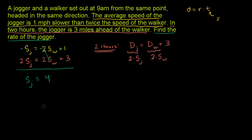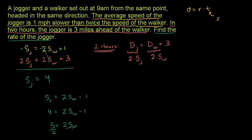If we also wanted to figure out the rate of the walker, we could substitute back into the original equation: the speed of the jogger equals 2 times the speed of the walker minus 1. We know the speed of the jogger is 4, so 4 equals 2 times the speed of the walker minus 1. Add 1 to both sides: 5 equals 2 times the speed of the walker. Divide both sides by 2: the speed of the walker is 2 and a half miles per hour. But we didn't even have to do that — this was the answer the problem was looking for.